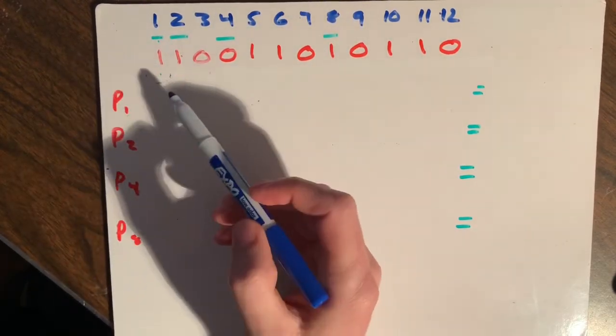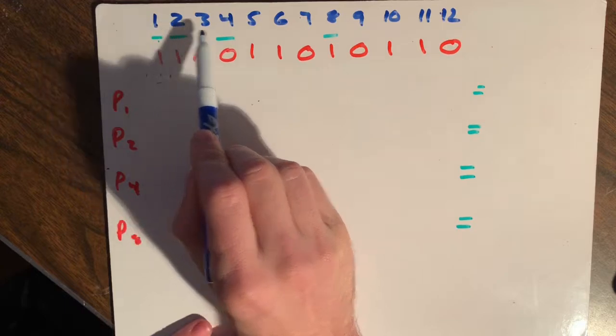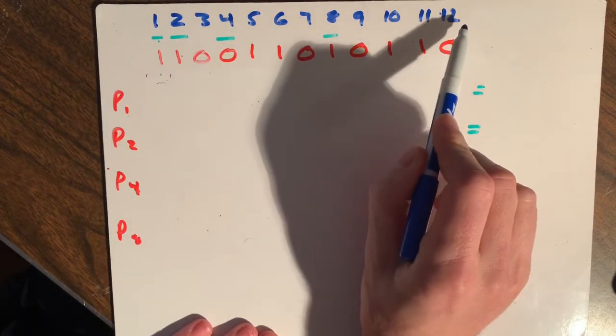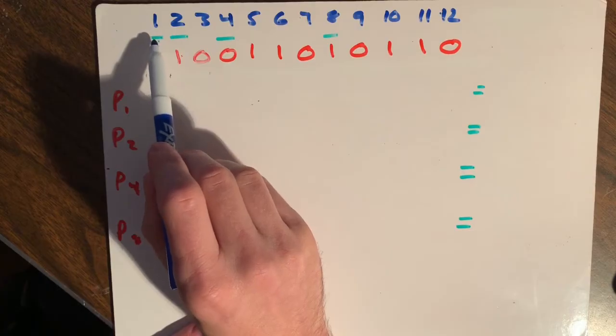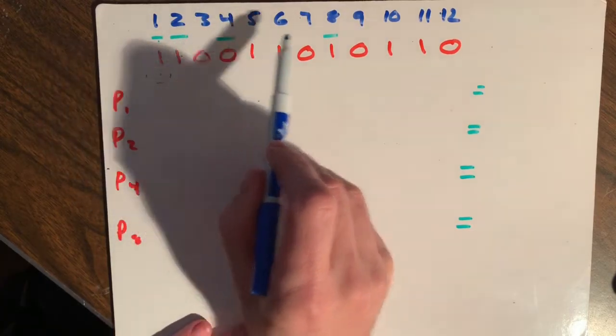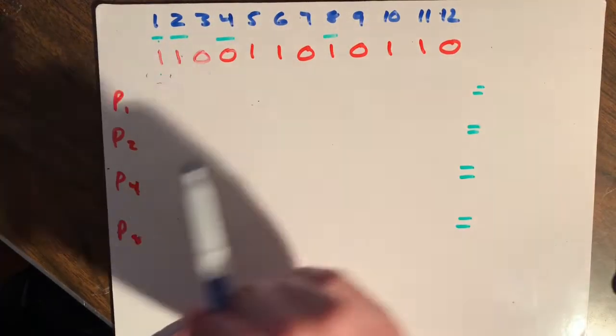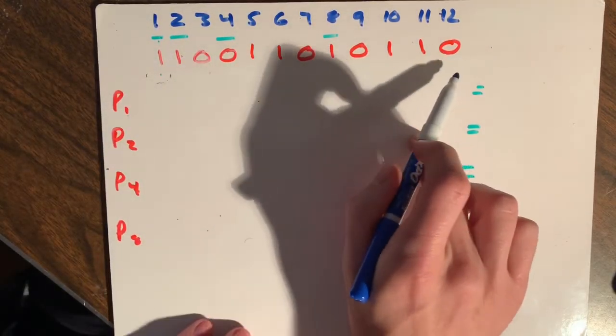The way I usually approach these problems is I start out and I make a number of however many bits we need, in this case 12. And then I mark the parities, which are 1, 2, 4, 8, 16, 32, etc. And then I fill in the binary code below that.